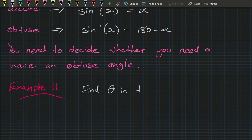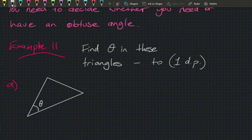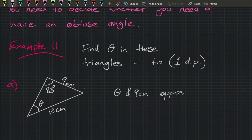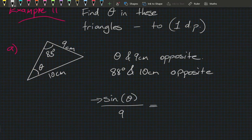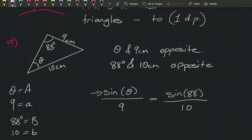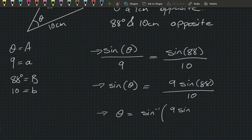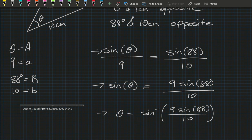In Example 11 part a, we find angle theta to one decimal place. The triangle has angle theta, another angle of 83 degrees, side lengths 10 cm and 9 cm. Theta and 9 cm are opposite each other; 88 degrees and 10 cm are opposite each other. So sine of theta over 9 equals sine 88 over 10. Multiplying both sides by 9 and taking inverse sine gives theta equals inverse sine(9 × sine 88 / 10), which is 64.1 degrees.